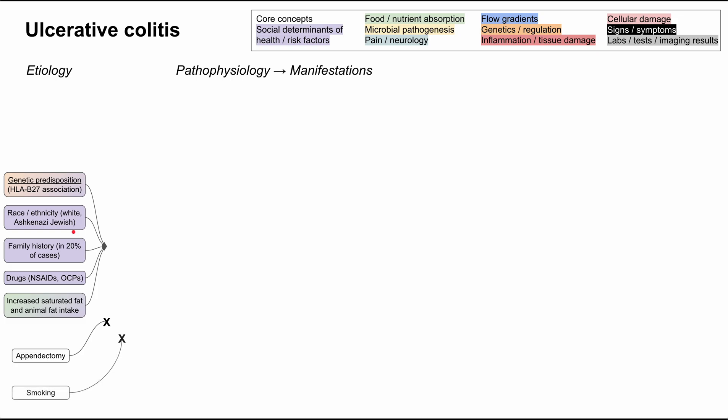There are also a couple of protective factors worth knowing. If you have an appendectomy, you're less likely to have UC — in older medicine, appendectomy was even used as a treatment. It's also interesting that smoking has a protective effect on ulcerative colitis, in contrast to Crohn's disease, where smoking exacerbates it. Of course, smoking is not recommended; it's simply been found to have an alleviating effect on symptoms in UC patients.